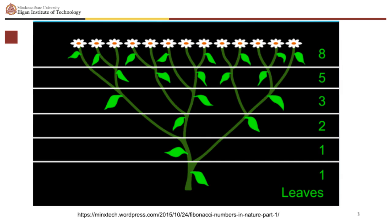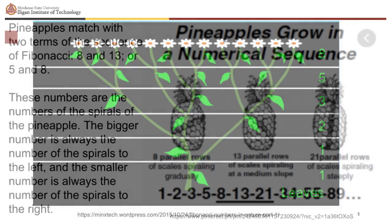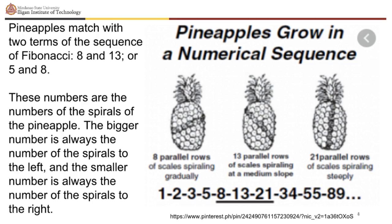The same law applies to all branches, giving us the Fibonacci sequence: 1, 1, 2, 3, 5, 8. Pineapples also match with two terms of the Fibonacci sequence — 8 and 13, or 5 and 8 — which are the numbers of spirals on the pineapple. The bigger number is always the number of spirals to the left, and the smaller number is always the number of spirals to the right.